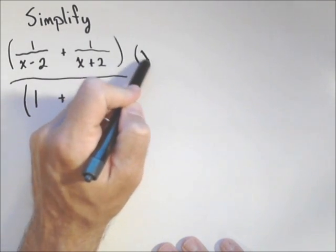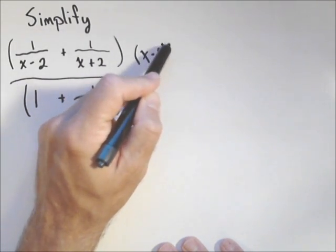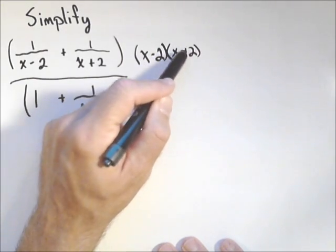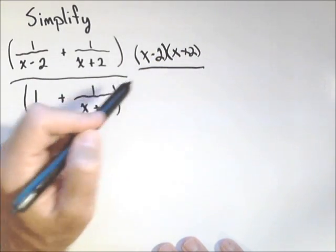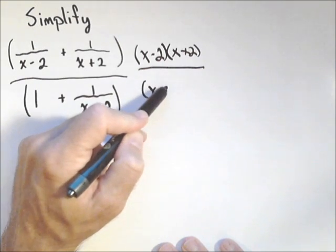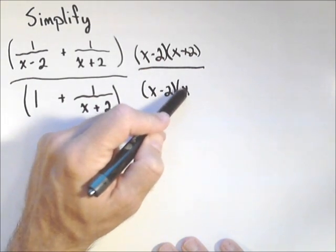So I'm gonna multiply by x minus two, x plus two on both top and bottom. X minus two, x plus two.